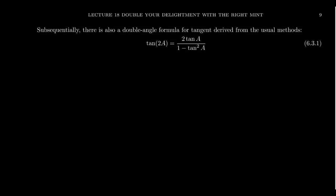So there is a double angle identity for tangent. It's given as tangent of 2a equals 2 tangent of a over 1 minus tangent squared a.